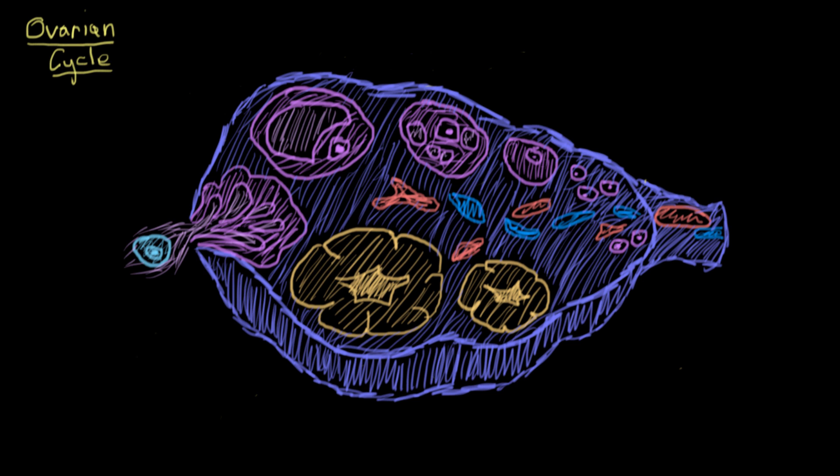The ovarian cycle is also responsible for what we commonly know as the menstrual cycle. Basically, the primary oocytes that are destined to be ovulated will develop in the ovaries, complete meiosis 1 just before ovulation, and then they'll be ejected out of the ovary as a secondary oocyte to be picked up by the fimbriae and swept into the uterine tube to hope for fertilization.